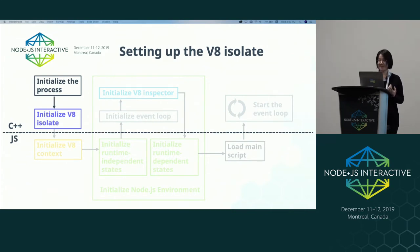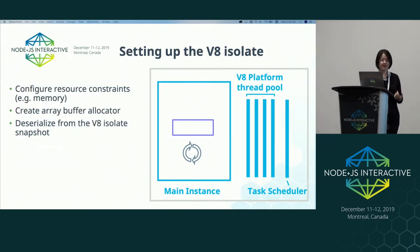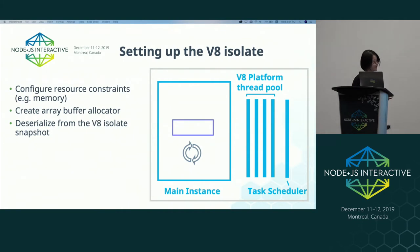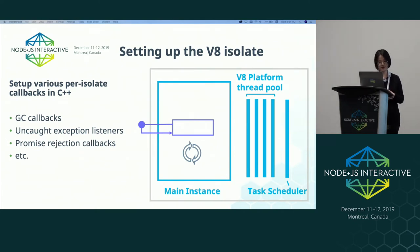Next, we move on to set up the V8 isolate for the main instance. V8 isolates are the instances of the V8 JavaScript engine. They encapsulate, for example, a JavaScript heap, a microtask queue for promises, and pending exceptions. To set up the V8 isolate, we first configure the resource constraints, including how much memory this V8 engine instance can use. We also create an array buffer allocator that is in charge of allocating external memory for buffers and other typed arrays. Then V8 will deserialize the isolate from an isolate snapshot — we'll cover snapshots later. Then we set up several per-isolate callbacks in C++, but most of them are not ready to be called at this point because they will have to work with JavaScript callbacks initialized later. These include the garbage collection callbacks, uncaught exception listeners, promise rejection callbacks, et cetera.